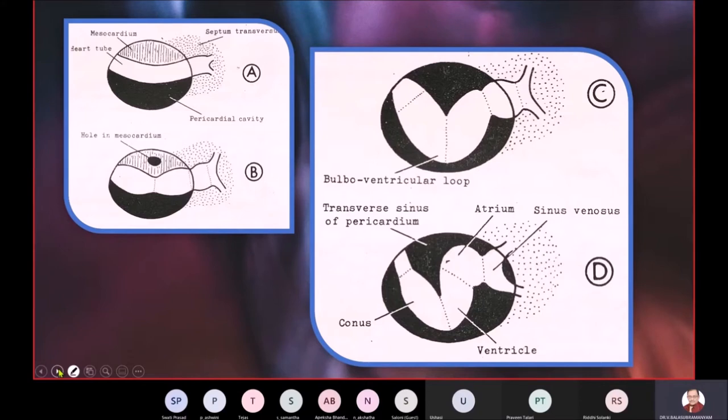I have already told you that the heart is developing, that tubular heart, whether it is one chamber, two chambers, whatever it is, it is all going on inside the pericardial cavity. Initially, the cavity is very small and you will notice that as the heart is developing inside this pericardial cavity,